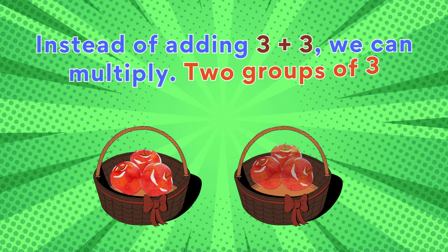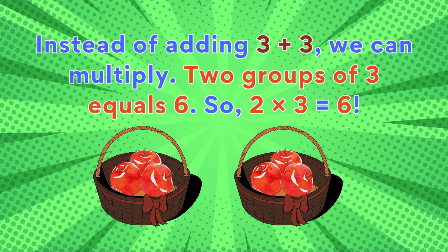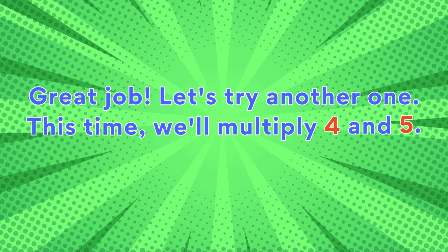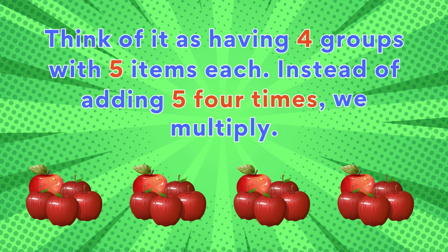Instead of adding three plus three, we can multiply. Two groups of three equals six, so two times three equals six. Great job! Let's try another one. This time we'll multiply four and five. Think of it as having four groups with five items each.